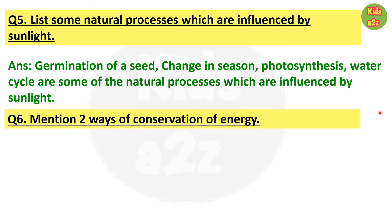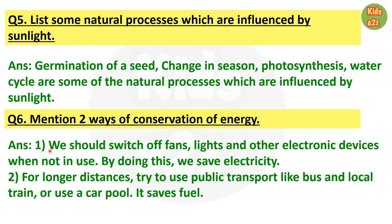Question number 6: Mention 2 ways of conservation of energy. Answer: Number 1 — We should switch off fans, lights, and other electronic devices when not in use, to save electricity. Number 2 — For longer distances, try to use public transport like buses and local trains, or use a car pool — it saves fuel. That's all for now. Thanks for watching Kids A to Z.